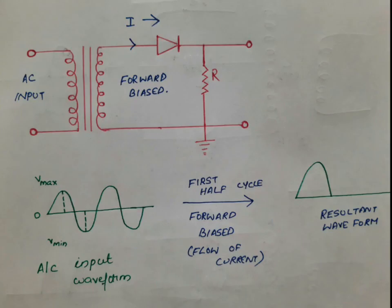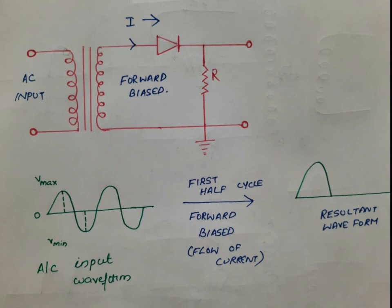Here you can see the circuit diagram of a half wave rectifier. This is the diagram of the rectifier when it is in forward biased condition. You can see the alternating current input waveform — it has a positive half cycle and a negative half cycle. The positive half cycle is converted into direct current and we get the resultant output. During each positive half cycle of the alternating current the diode is forward biased, meaning the anode is positive with respect to the cathode, resulting in current flowing through the diode and we get the output waveform.